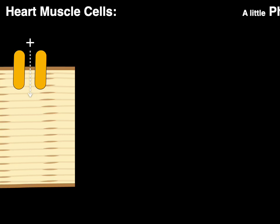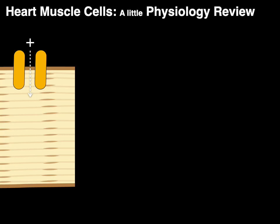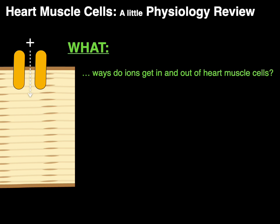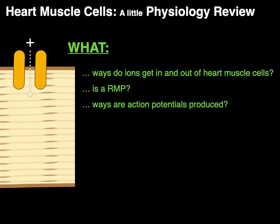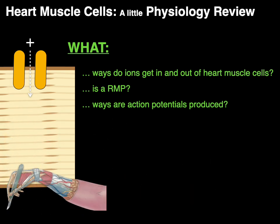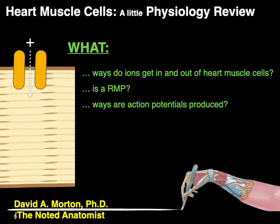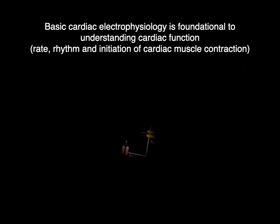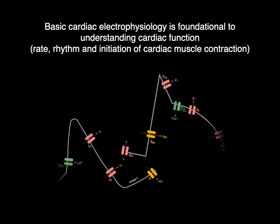Continuing with heart muscle cells, we're going to do a little physiology review and answer the questions: what ways do ions get in and out of heart muscle cells, what is a resting membrane potential, and what ways are action potentials produced? My name is Dr. Morton and I'm the noted anatomist. Basic cardiac electrophysiology is foundational to understanding cardiac function, things like rate and rhythm and the initiation of cardiac muscle contraction.